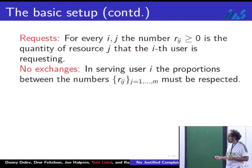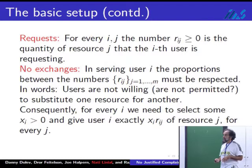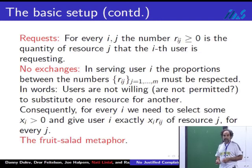These numbers are fixed. Users are unwilling, or perhaps there are external rules that rule out these possibilities. These numbers are carved in stone, you cannot change them. What we're allowed to do is find a factor that we will multiply the requests of each user by.